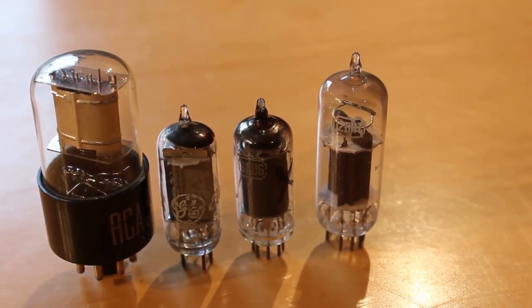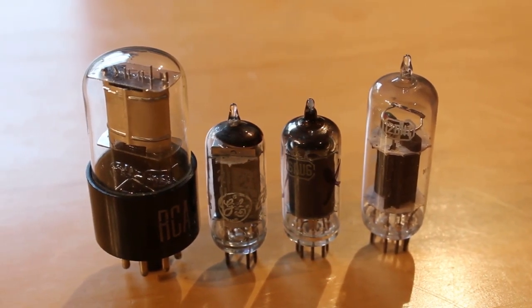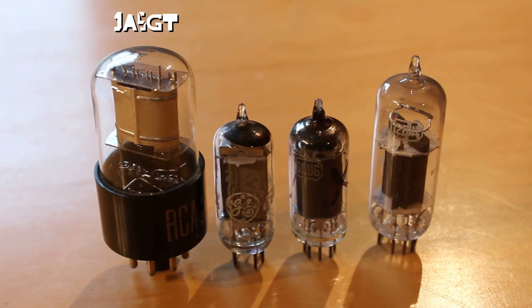So here are the four tubes that I want to check today. They're all bad in their own way. From left to right we have a 1A5GT. This is a directly heated power pentode.